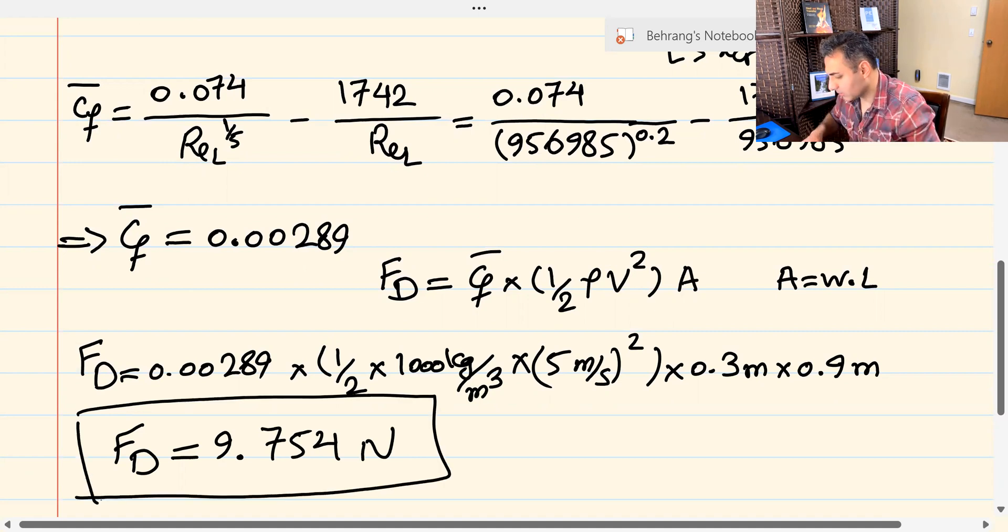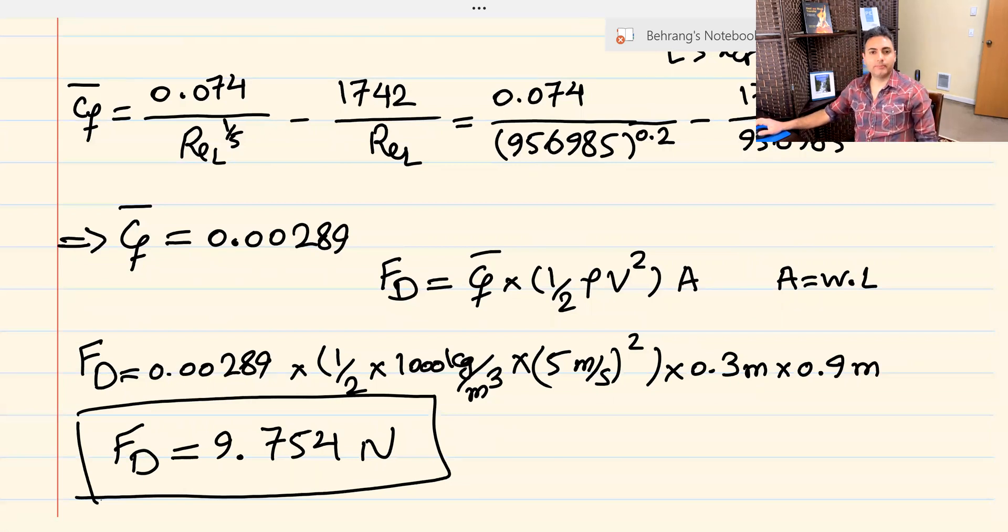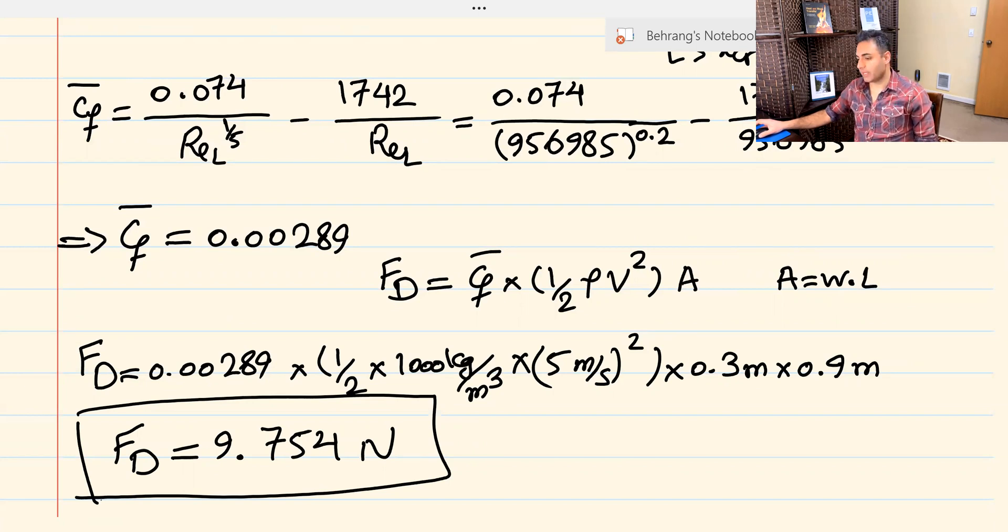That's the answer to this problem. So, this was a category 2 problem, an external flow over a flat plate, and it was a smooth plate. Boundary layer was not tripped, and it was mixed flow because Reynolds number was bigger than 5 times 10 to the 5th.